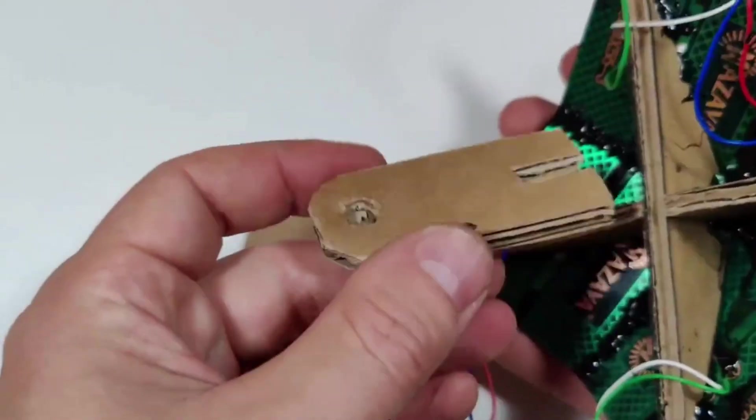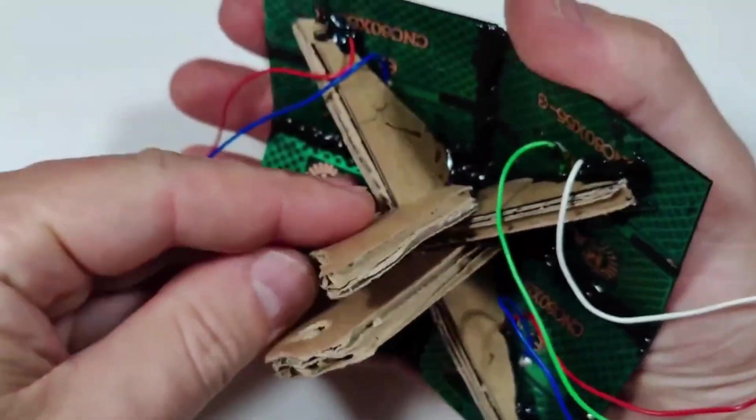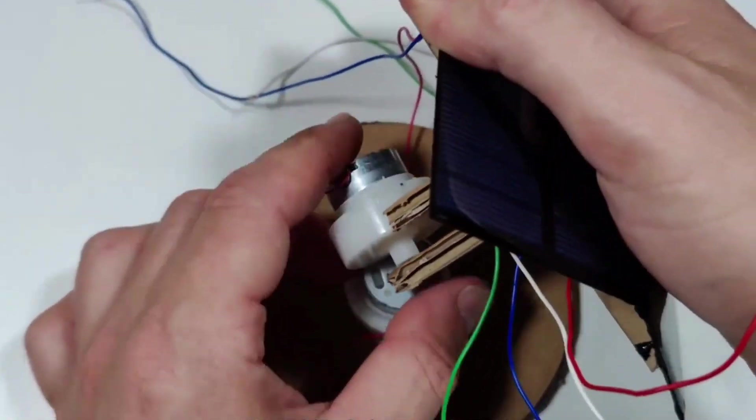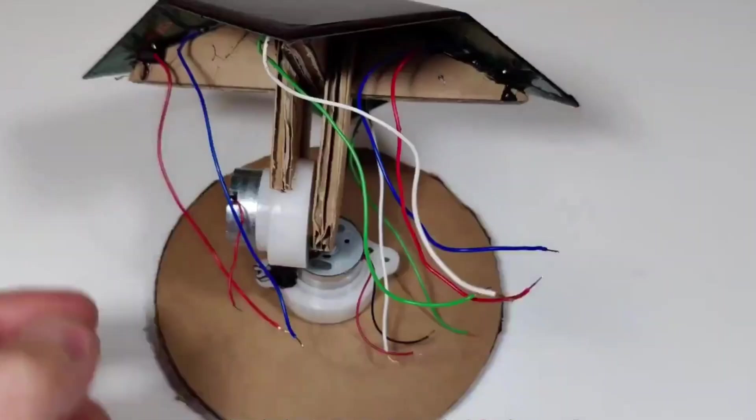Cut two more pieces of cardboard to make a simple linkage between the solar panel support and the gearbox of the motor. One side attaches to the support frame and the other connects to the gear shaft of the vertical motor.